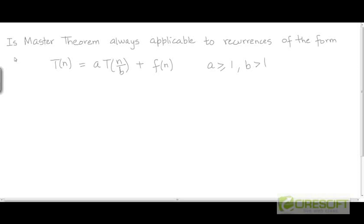We have looked at numerous examples of recurrences of the form T(n) = A·T(n/B) + F(n), where A is greater than or equal to 1, B is greater than 1, and both A and B are constants. One question that arises here is: is it always possible to apply the master theorem to recurrences of this form?